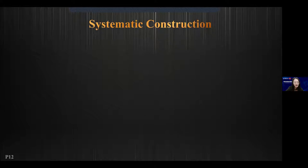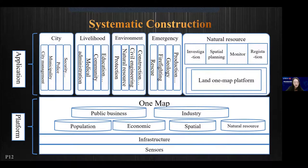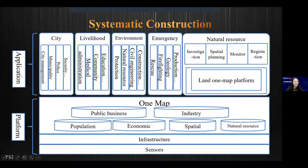Thirdly, we need to set up a systematic construction to build a complete platform covering all kinds of industries — city management, livelihood, environment, emergency, and natural resources. The more complicated the system, the more abundant applications can be included in the OneMap platform.